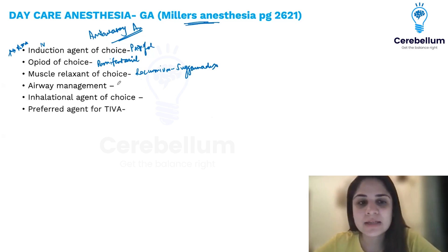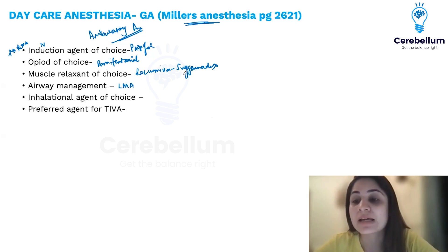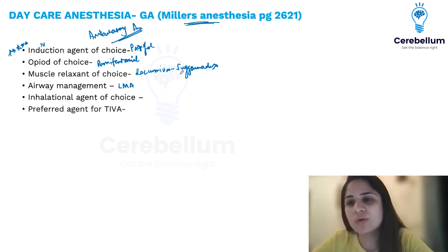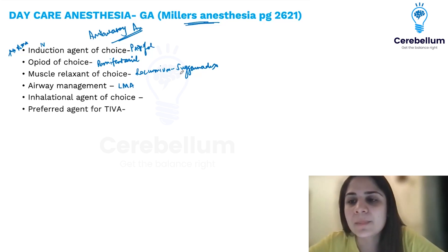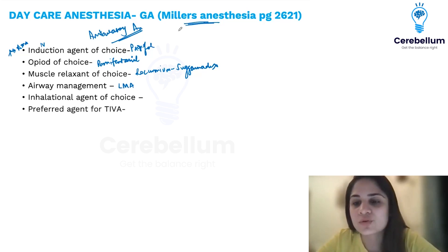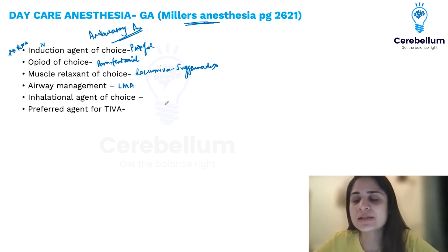For airway management, the device of choice is the LMA (laryngeal mask airway), not an endotracheal tube. The endotracheal tube causes sore throat. Since the patient needs to celebrate his girlfriend's birthday in the evening, we use LMA to avoid a sore throat.